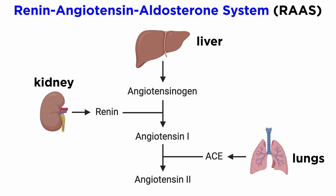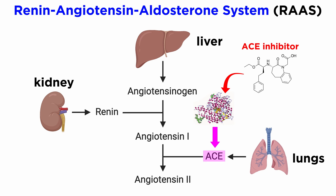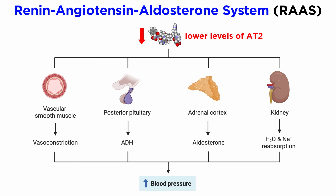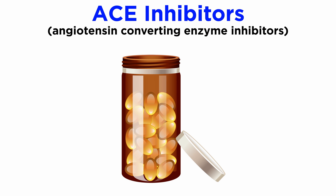Now that we understand the RAAS, it's much more straightforward to understand how ACE inhibitors lead to a decrease in blood pressure. ACE inhibitors bind to and block the active site of the enzyme, stopping angiotensin-1 from binding and disrupting its function. When ACE is inhibited, less angiotensin-1 can be enzymatically converted to angiotensin-2, and since only angiotensin-2 is able to activate the angiotensin-2 receptor, there will be less contractility of vascular smooth muscle, less angiotensin-induced ADH release from the pituitary gland, and less aldosterone secretion from the adrenal cortex. Due to this multifaceted pharmacological mechanism, ACE inhibitors are an important tool in decreasing blood pressure and are widely prescribed for this reason.